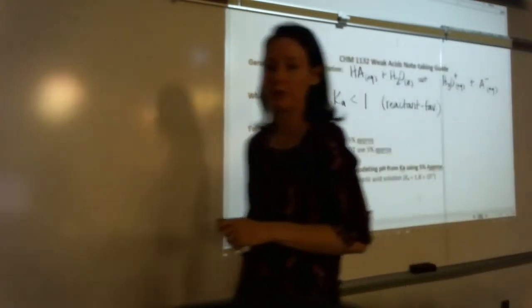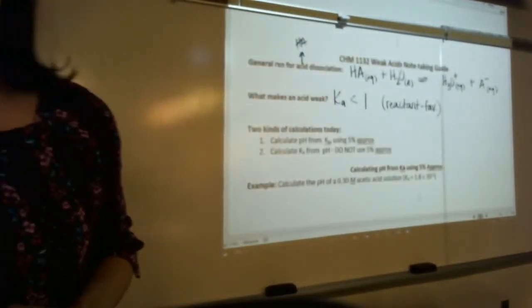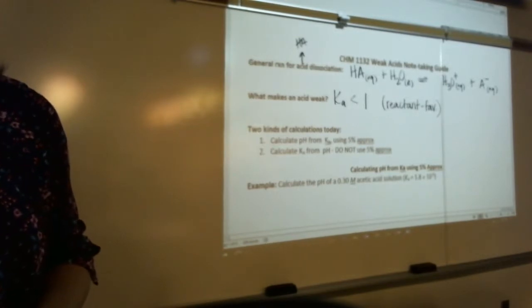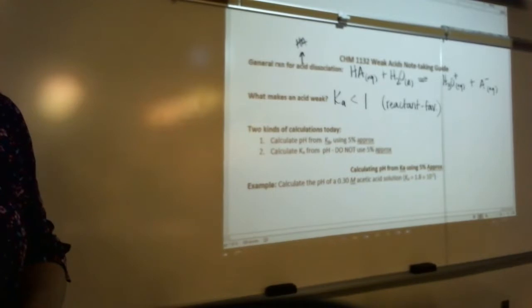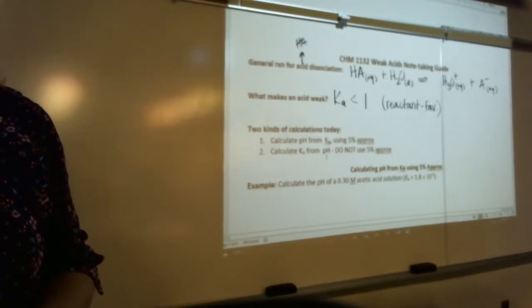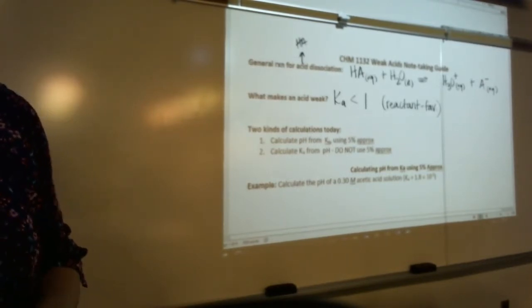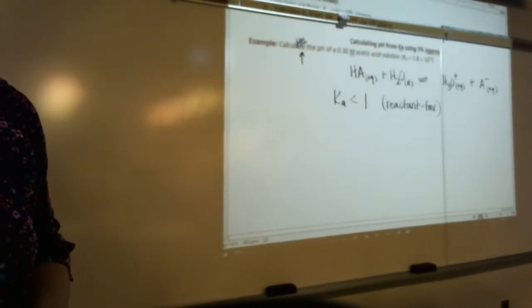So there are two kinds of calculations we're going to be doing today. The first one is we're going to calculate pH from Ka. And that one we can use the 5% approximation on. On the other kind of calculation, we're going to calculate Ka from the pH. But we are not going to use the 5% approximation there because we won't need it. So, let's do the first kind, calculate pH from Ka.